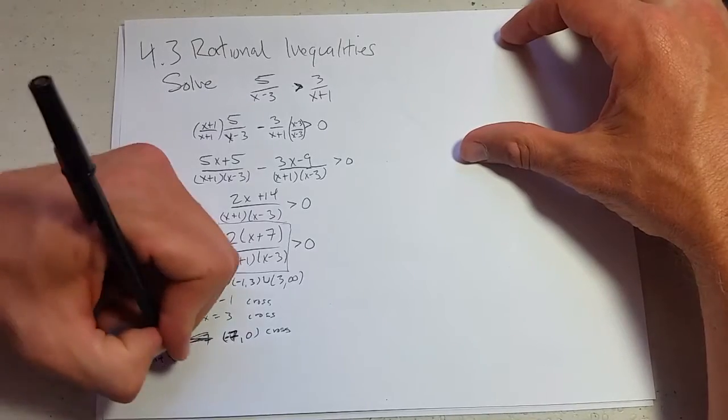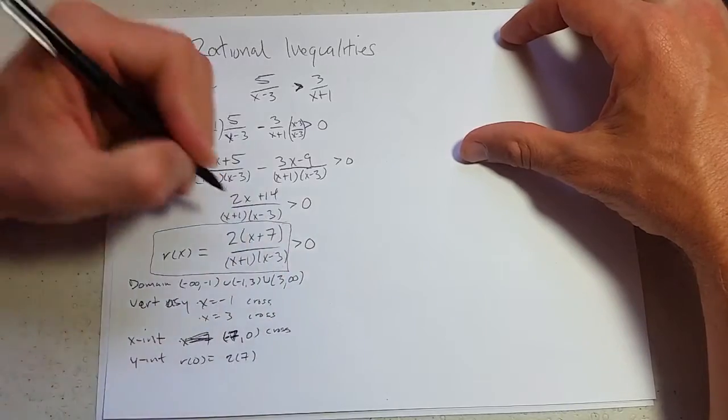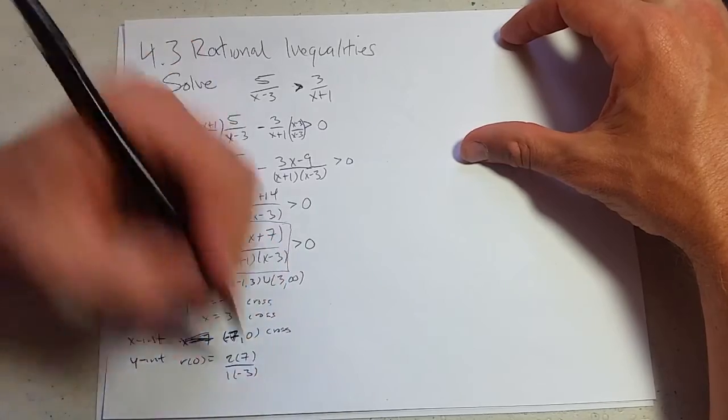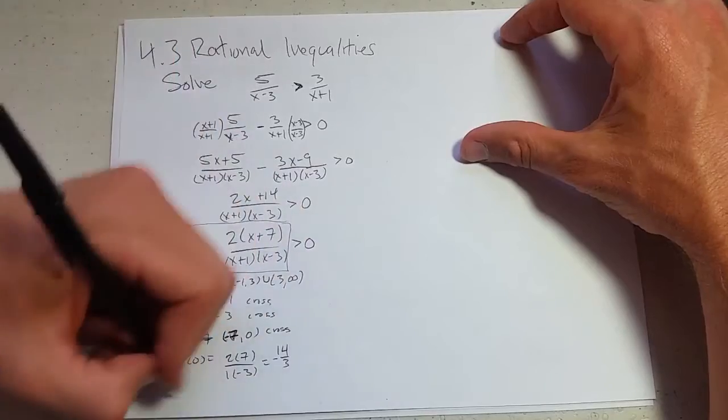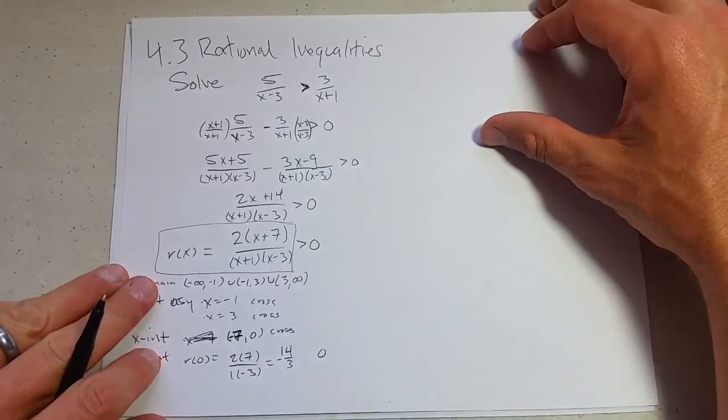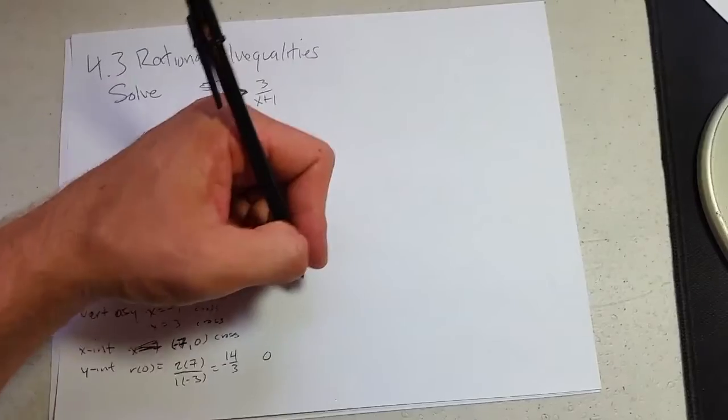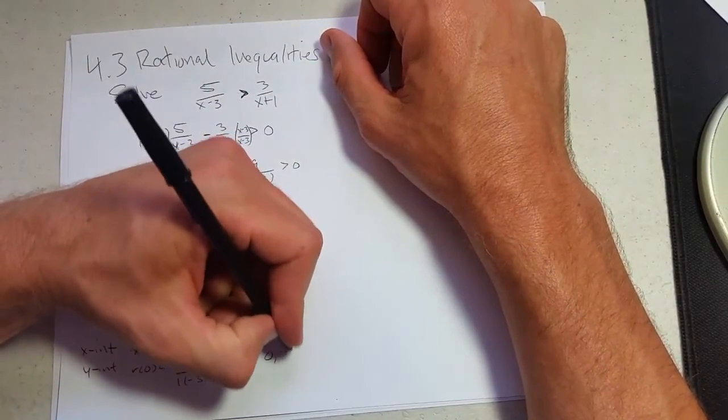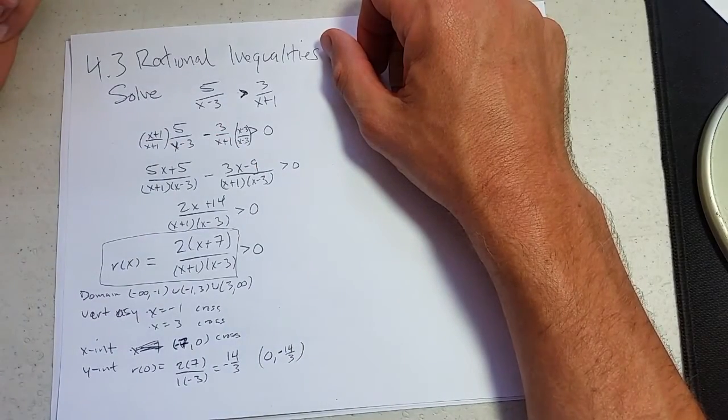y-intercept, what is r of 0? Plug in 0, we get 2 times 0 plus 7 is 7. 1, negative 3. This is going to be an ugly number. 14 thirds, negative 14 thirds. Sorry, that's my cat. Negative 14 thirds is our y value. Okay. So, we've got our y-intercept.